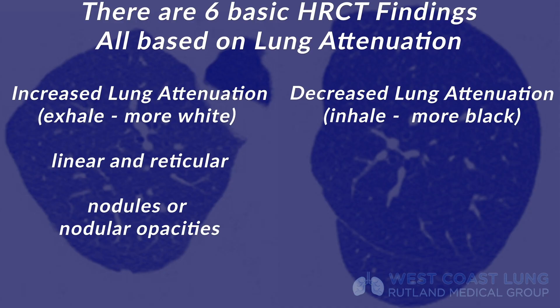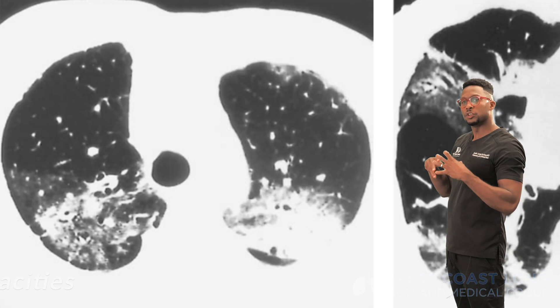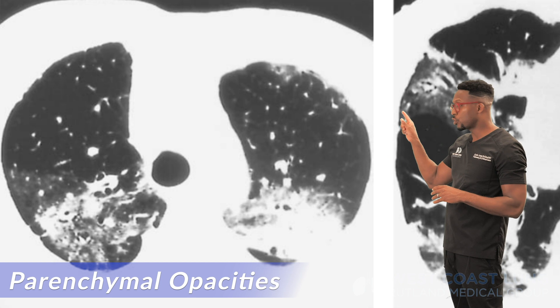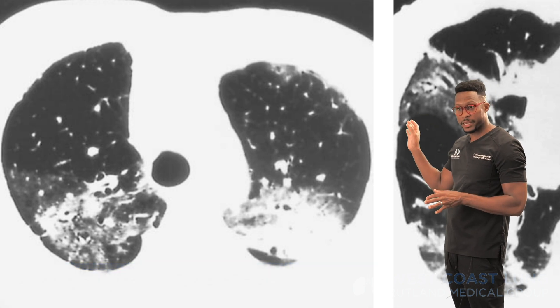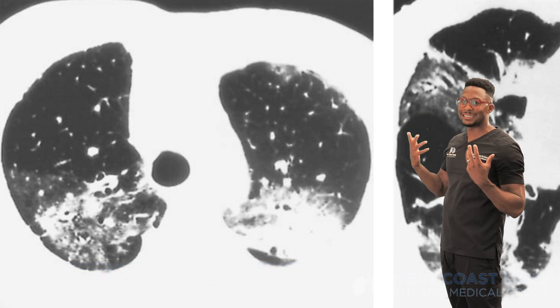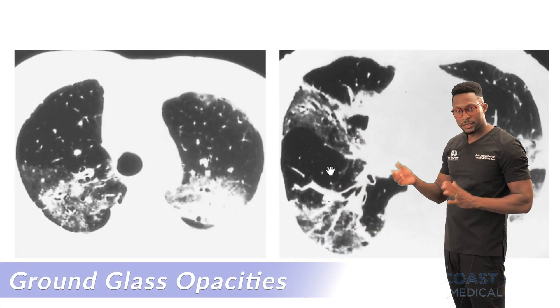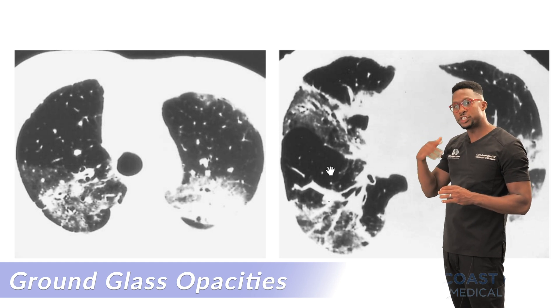The third finding of increased lung attenuation is parenchymal opacities — any increased whiteness collected together that's larger than three centimeters in size. A pneumonia will look this way. When you see this really dense whiteness, it's easy to identify — you call that a parenchymal opacity. You also have to know about ground glass opacities, which are any opacification in which you can still see the pulmonary arteries — a lighter-skinned opacification.